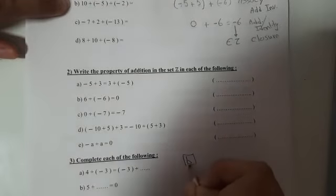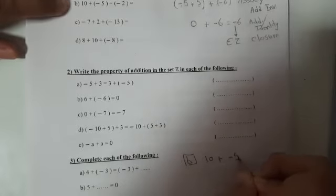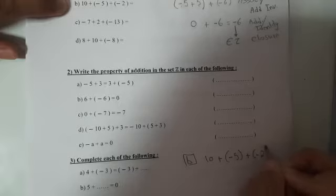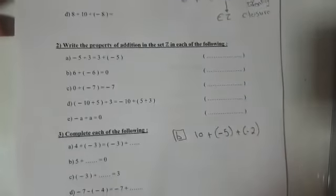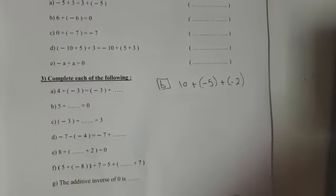I will solve it here. 10 plus negative 5 plus negative 2. I want to solve this using the properties.